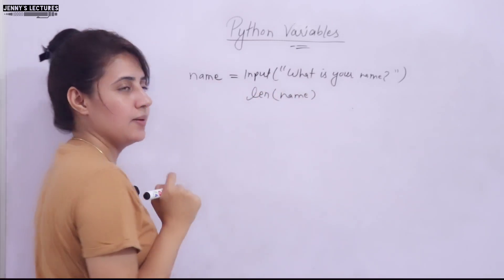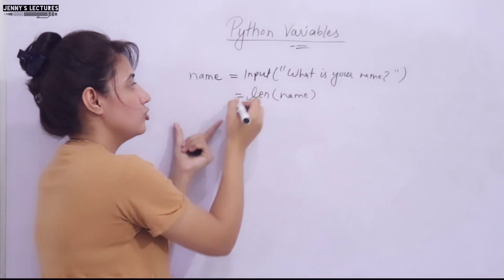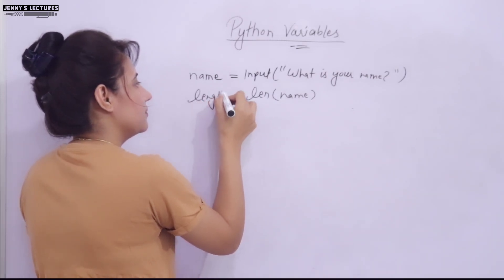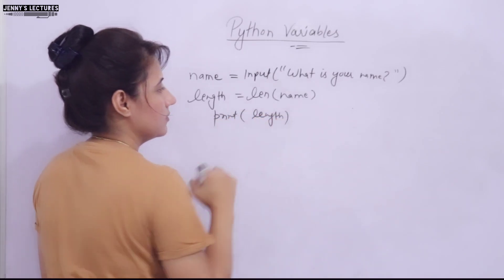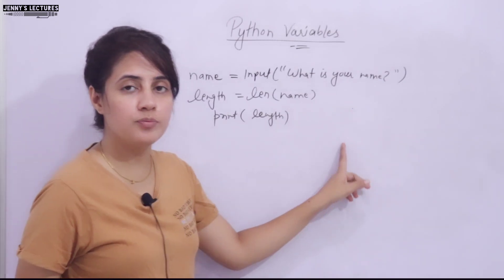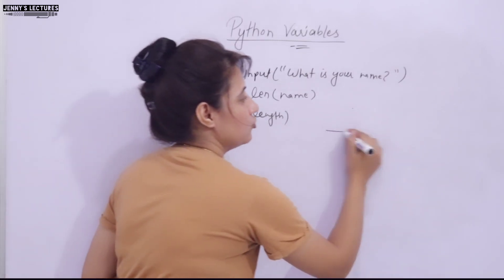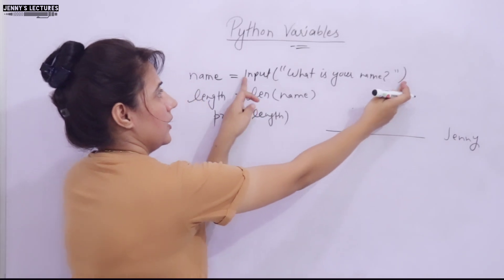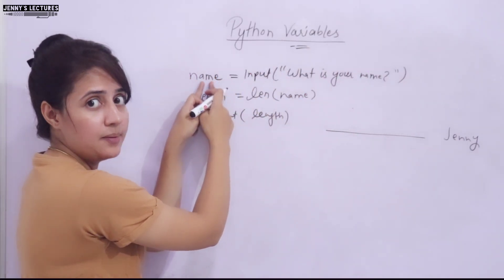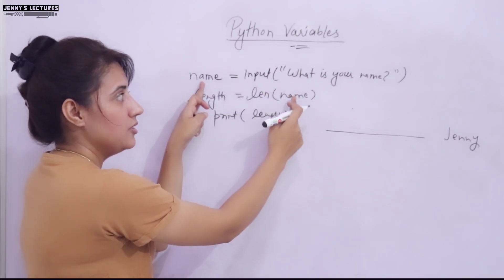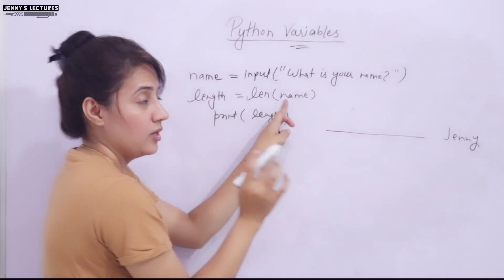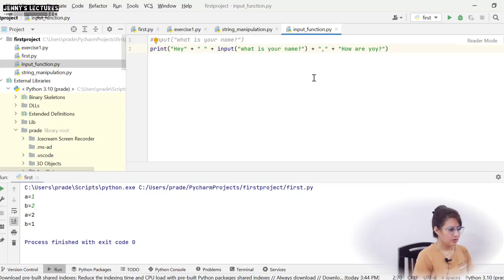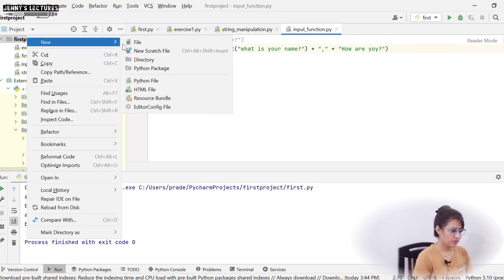Here's the solution: use the input function — name = input('What is your name?') — and store the entered value in the variable 'name'. Then use the len function: length = len(name). Whatever len returns, store it in a variable called 'length'. Finally, print(length). So when you run it and enter 'Jenny', behind the scenes Jenny is stored in name, len(name) calculates 5, that 5 is stored in length, and 5 is printed.